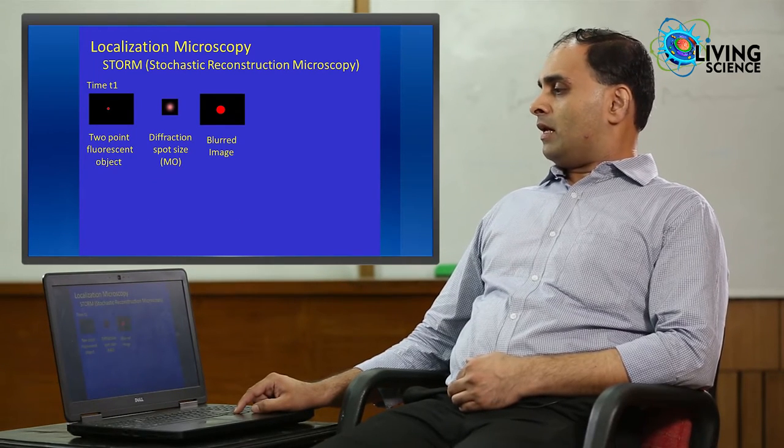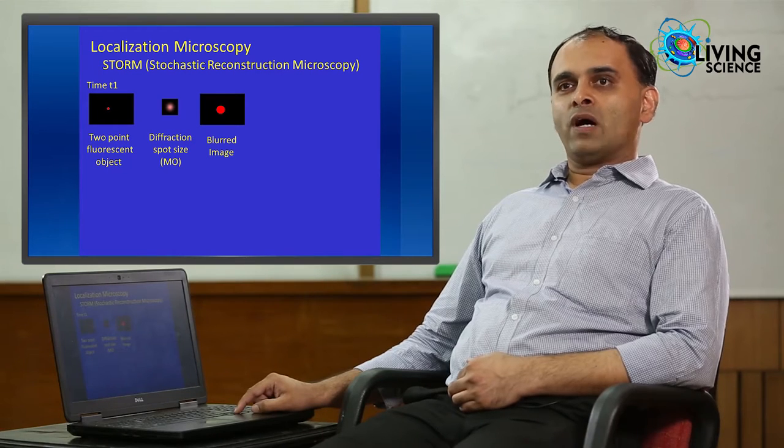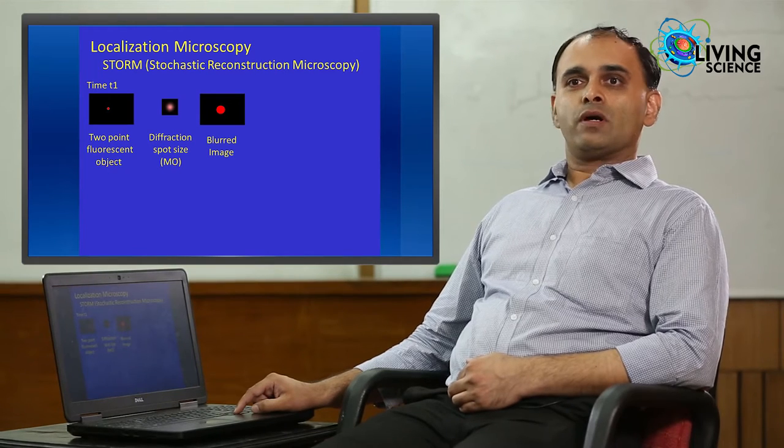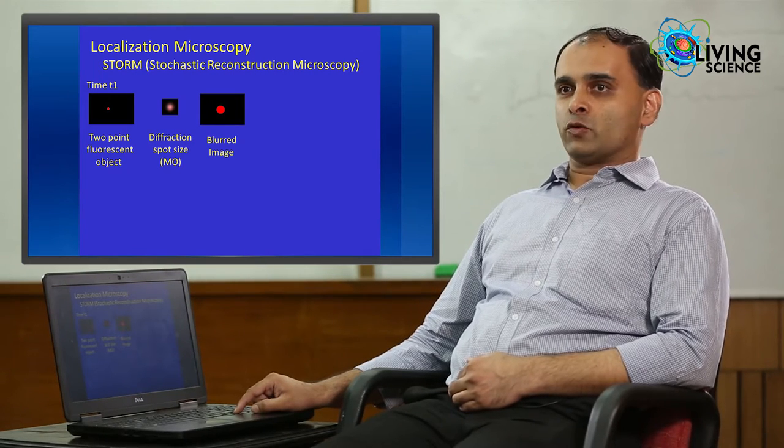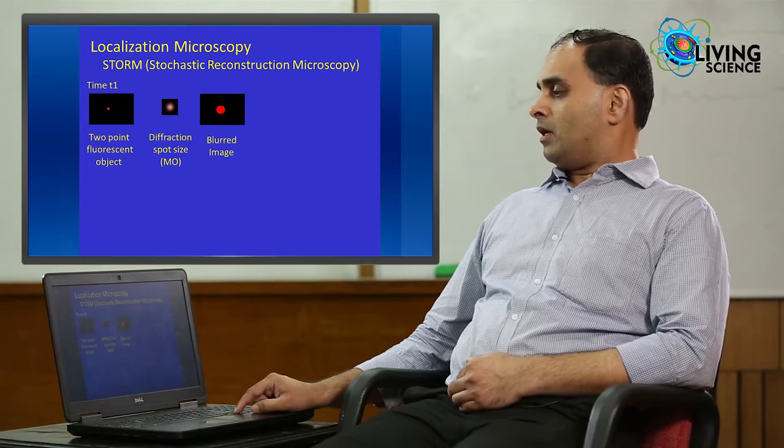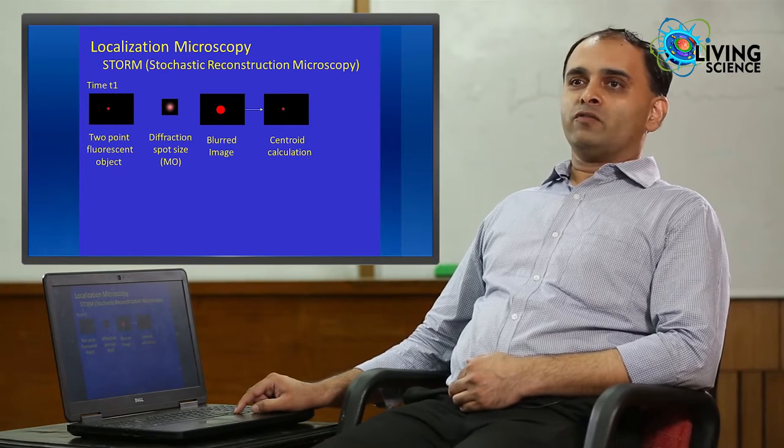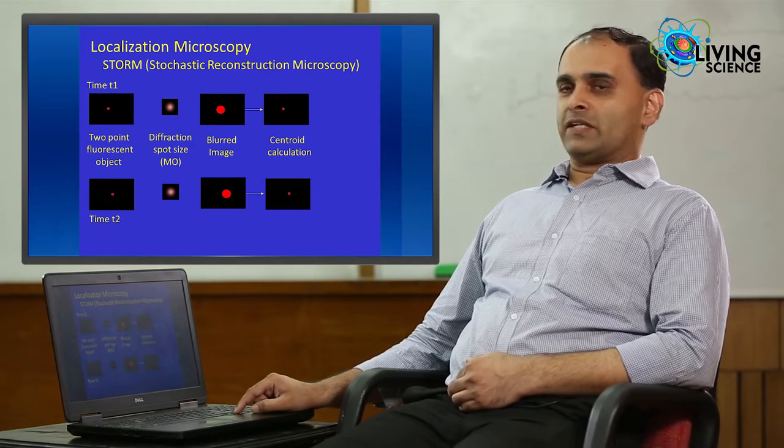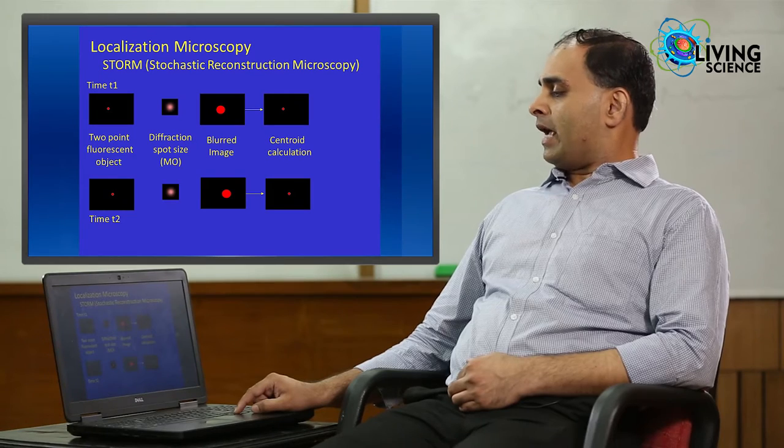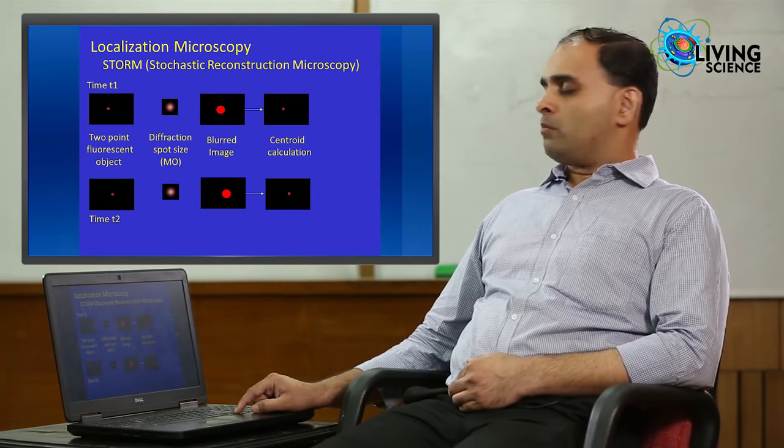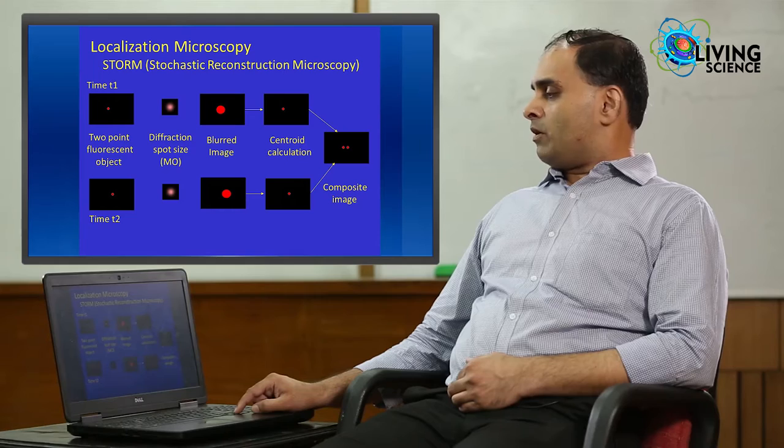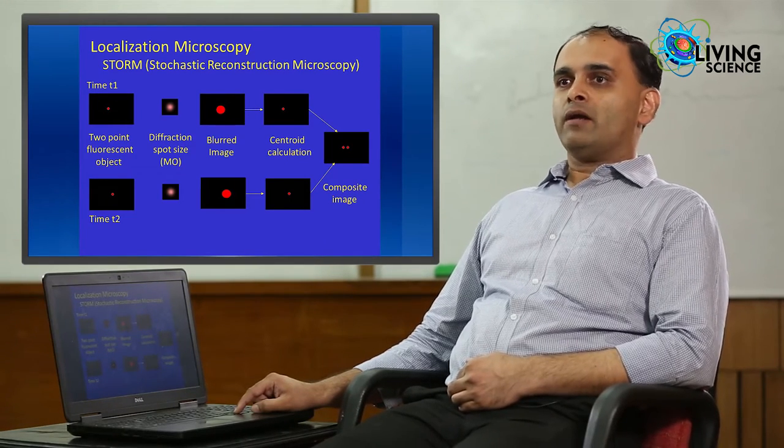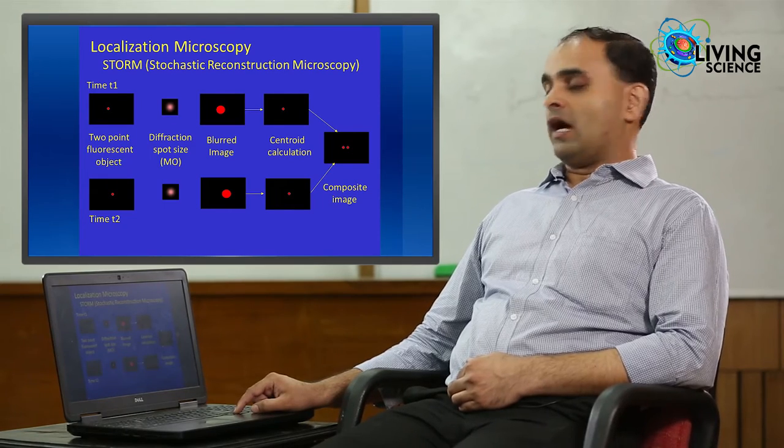For example, let us consider at time t1 that we can turn on one of the spots. The diffraction limited spot size is again quite big. So, corresponding to this single point source, you still get a blurred image. But I can now compute the centroid of this large blurred spot. At time t2, I can activate the second fluorescent center and calculate again the centroid of the corresponding blurred spot. These two centroids can then be combined and a composite image is obtained, where the two point sources are now well resolved.